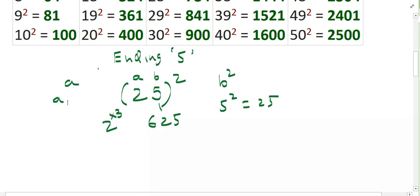Let's go for one more example here. Say 35 whole square. So first what you do is 5 square, that is 25. So here the number is 3. Immediately after 3, we get 4. 3 into 4, you know, 12. So this is the answer here.